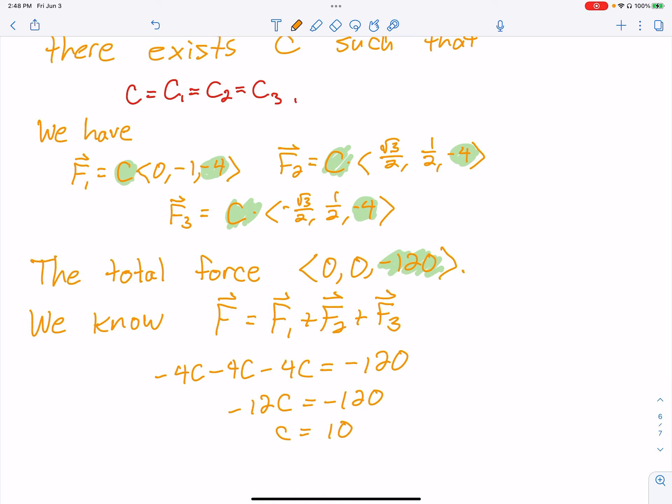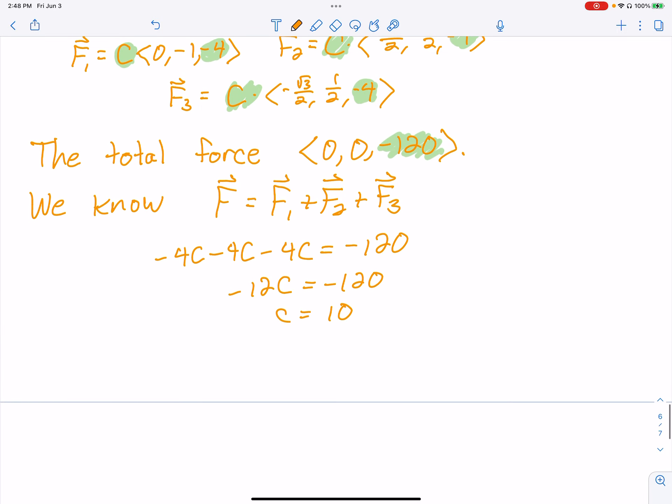They just wanted the forces in each direction, which now I have. So therefore, F1, that force, is 10 times <0, -1, -4>. And we just multiply this through: <0, -10, -40>.